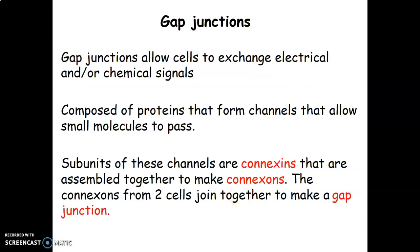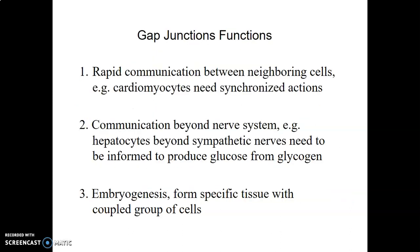GAP junctions allow exchange of electrical or chemical signals. They are composed of proteins on the cell membrane that form channels to allow small molecules to pass. GAP junctions have subunits called connexins, which are assembled together to make connexons. Two connexons from two cells join together to make a GAP junction.